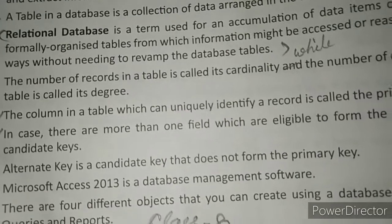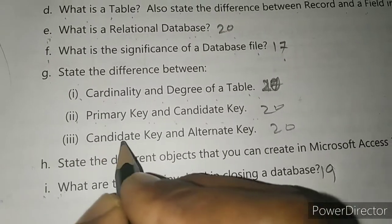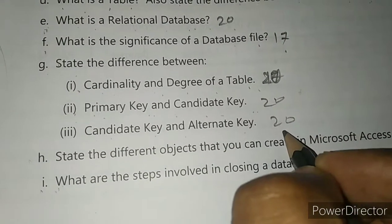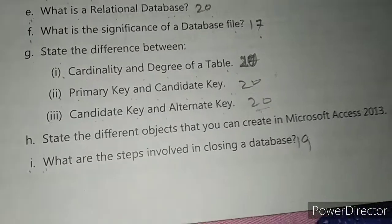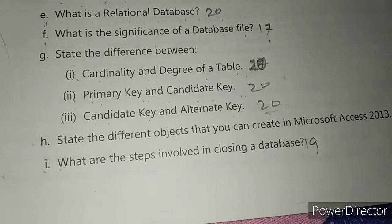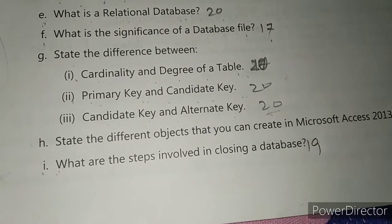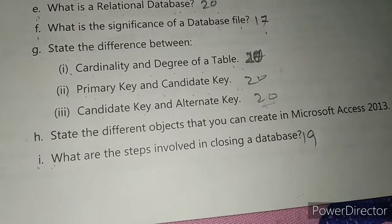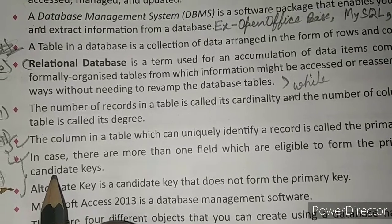The third part is the difference between candidate key and alternate key, also on page number 20 in the quick recap. Write the heading: 'Difference between Candidate Key and Alternate Key', and write the definition under it.